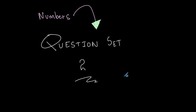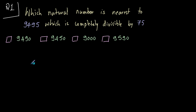Hey guys, this is a question set video for the chapter 'Operations on Numbers.' In this video I'll be taking about five tricky questions. Let's get started with our first question: which natural number is nearest to nine thousand four hundred and ninety-five which is completely divisible by seventy-five?